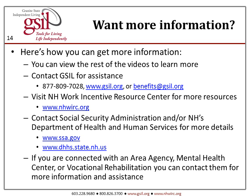Want more information? You can view the rest of the videos to learn more. Contact Granite State Independent Living's Financial Planning and Benefit Services at 877-809-7028, website www.gsil.org, or email benefits@gsil.org. Visit the New Hampshire Work Incentive Resource Center at www.nhwirc.org. Contact Social Security Administration at www.ssa.gov and the Department of Health and Human Services at www.dhhs.state.nh.us. If you are connected with an area agency, mental health center, or vocational rehabilitation, you can contact them for more information and assistance.